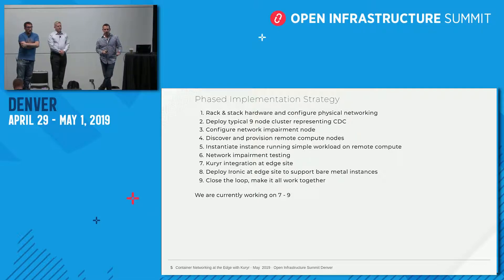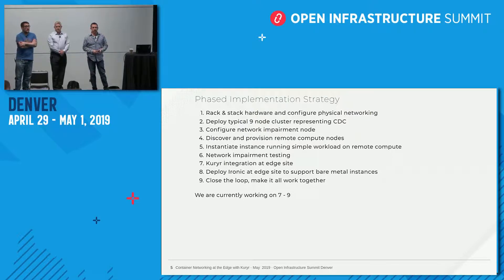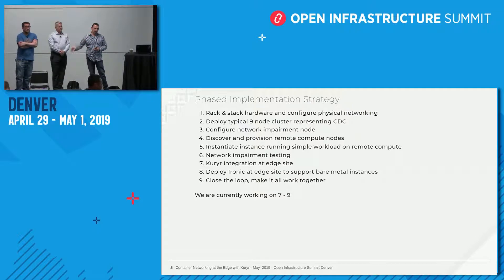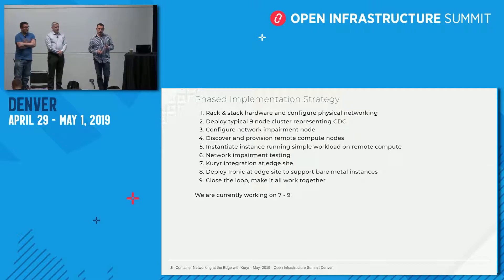The way we rolled it out was a phased implementation. We racked and stacked the servers, deployed a relatively vanilla stamp with nine nodes — three HA controllers, three computes, three storage. Then we configured a network impairment box as a man-in-the-middle to simulate a WAN. We set up a remote site with a compute instance, deployed workloads, did testing with network impairment. The pieces we're working on now are getting Courier integrated and hopefully getting Ironic at the edge to deploy Kubernetes to bare metal.